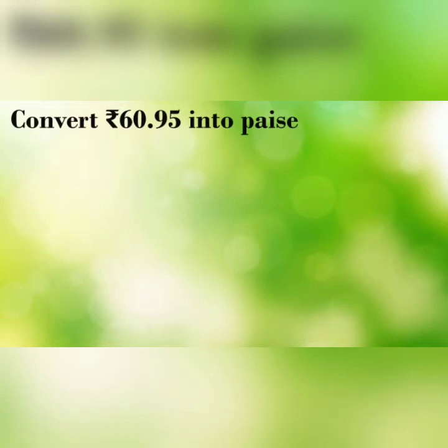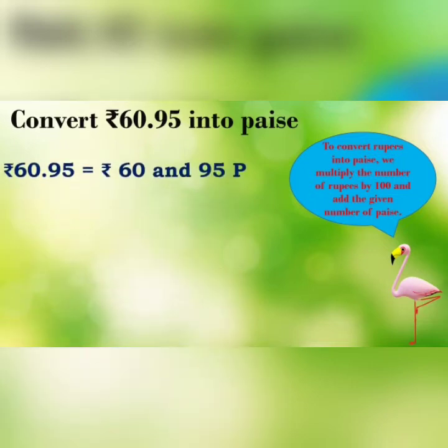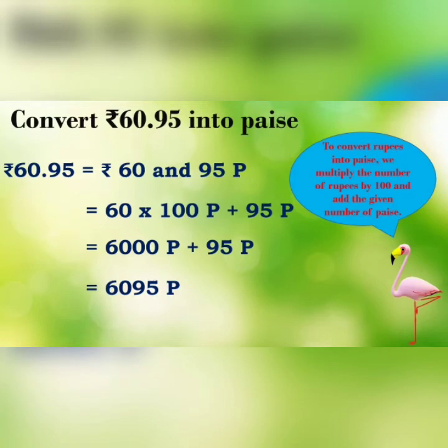Our next question is: Convert Rupees 60.95 into Paise. To convert Rupees into Paise, we multiply the number of Rupees by 100 and add the given number of Paise. Rupees 60.95 can also be written as Rupees 60 and 95 Paise. We multiply Rupees 60 by 100 and then add 95 Paise. Our answer is 6,095 Paise.